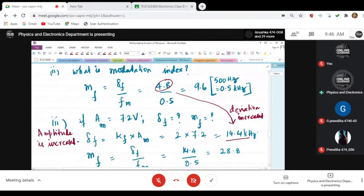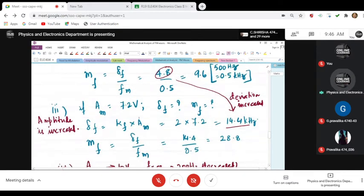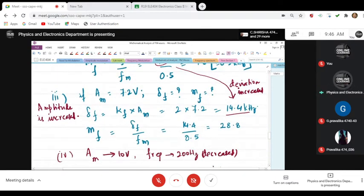Next, in the same problem, if af happens to be 7.2 volts, calculate delta f and mf. I think you should be able to do this. Delta f is the same way, mf is this, and this is solved.